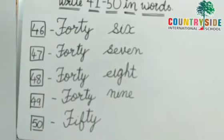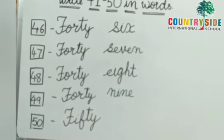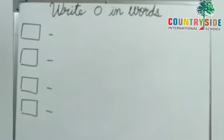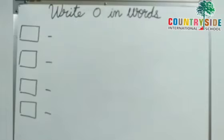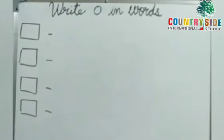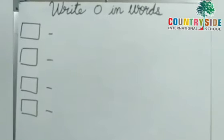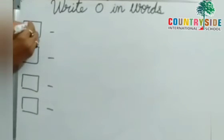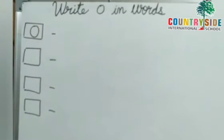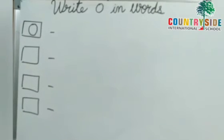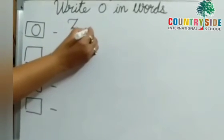All completed with ma'am. Good. Now we will move to our page. All ready? Write zero in words. Now we will write the spelling of zero. Write here. Zero. Now you have to write with ma'am and you also have to speak the spelling. Capital Z-E-R-O. Zero.